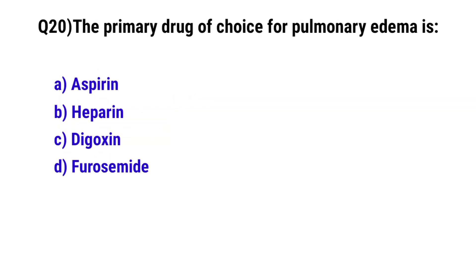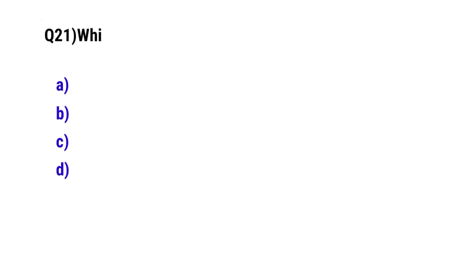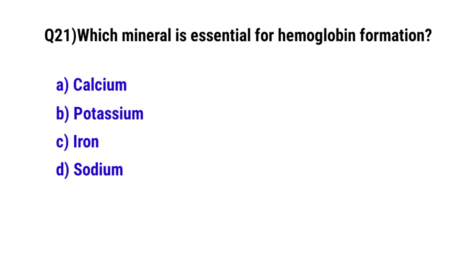Question number 20: The primary drug of choice for pulmonary edema is? The correct option is D: Furosemide. Question number 21: Which mineral is essential for hemoglobin formation? The correct option is C: Iron.